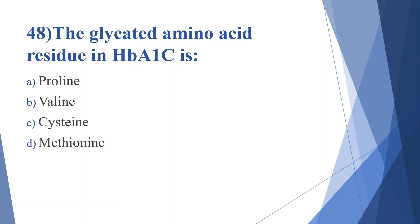Forty-eighth question: the glycated amino acid residue in HbA1c is. Option A: proline. Option B: valine. Option C: cysteine. Option D: methionine. Answer is option B, valine.